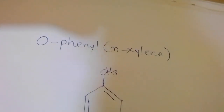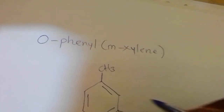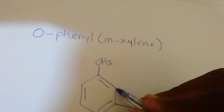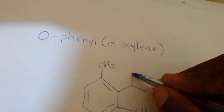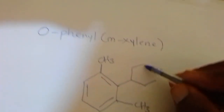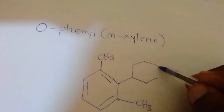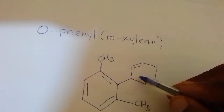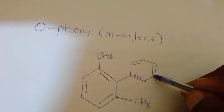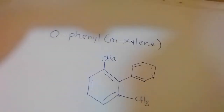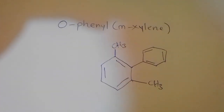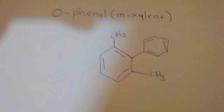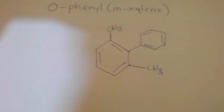At the ortho-2 position of the M-xylene, there is a phenol group, which is extended from that position. So that's how to draw the structures — in this case O-phenol M-xylene. Thanks for watching, and don't forget to subscribe after watching.